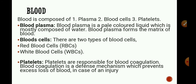Blood platelets help in coagulation of blood, that is clotting of blood. The blood transports nutrients, respiratory gases, waste products, hormones, enzymes and salts through circulation. And so the circulatory system is an important part of our body for survival.